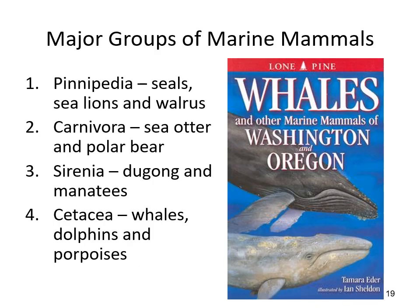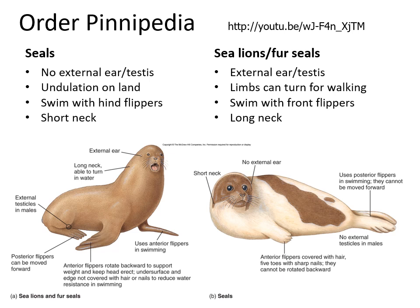There are four groups of marine mammals: pinnipeds, which are carnivores; other carnivore species including the sea otter and polar bear; sirenians, which are completely marine — the dugong and manatees; and cetaceans, which include both toothed whales and baleen whales, dolphins, porpoises, and the great blue whale. We'll go through each starting with pinnipeds.